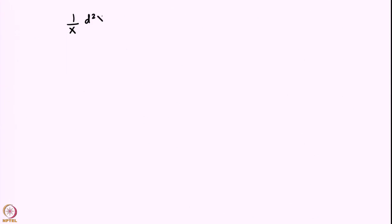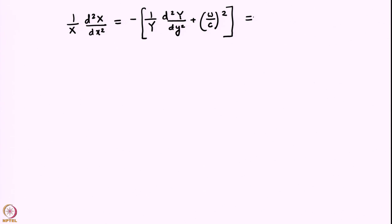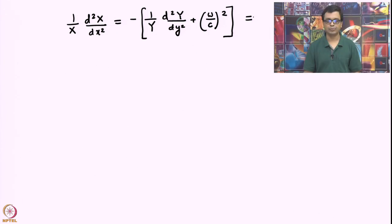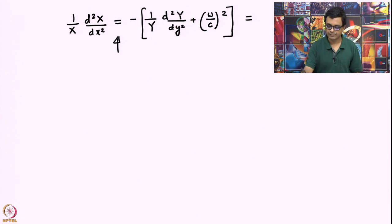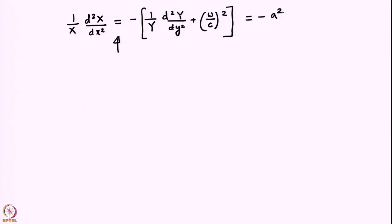The equation can be further written using variable separation arguments, separating everything depending on small x on one side and everything depending on small y on the other. We have a pure function of small x on the left and a pure function of small y on the right. Since small x and small y can be varied independently, each expression must equal the same constant, and we choose a negative constant, minus a-squared — this is the separation constant.